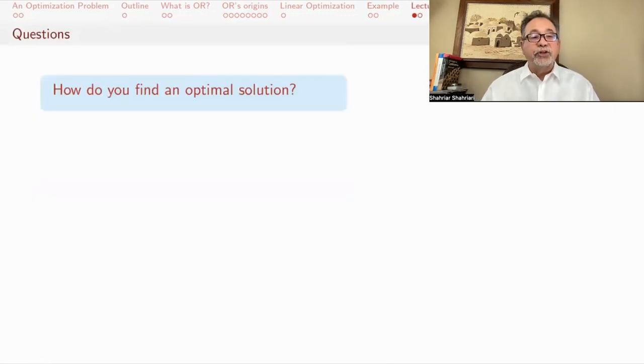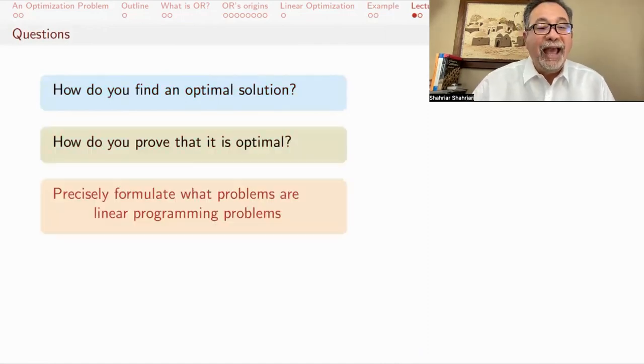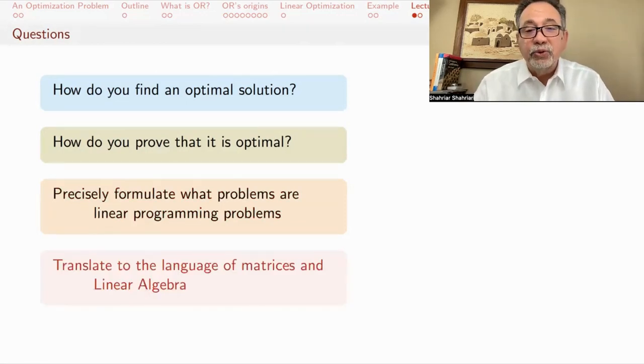The questions that we have to answer is, first of all, how do you find an optimal solution? How do you prove that it's optimal? And we need to actually precisely formulate what kinds of problems are linear programming problems. I said problems like this, but how general can they be? In this set of lectures, we will do everything through matrices and linear algebra. We will spend a number of lectures telling you how to find the optimal solution, then looking under the hood and seeing how you prove that it's optimal, and so on.